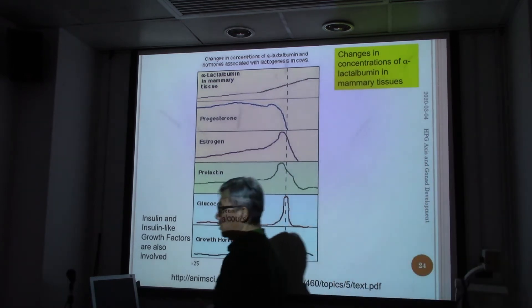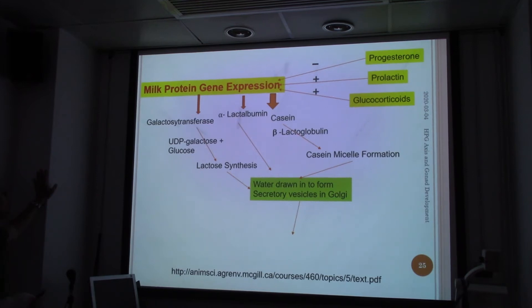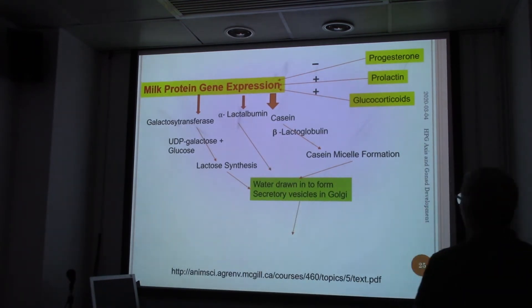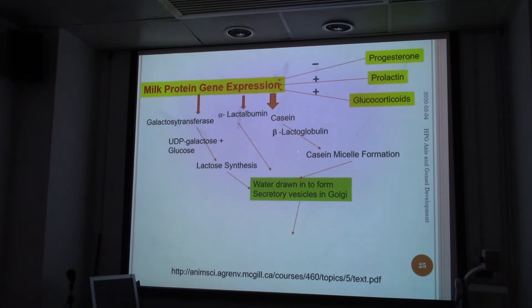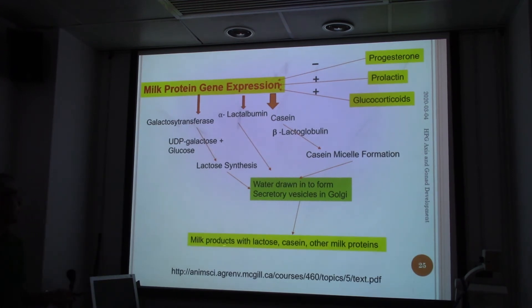Regarding milk production and what we have in milk: milk protein gene expression involves important enzymes forming glucose and lactosynthesis. We have lactalbumin and casein, which is also a major protein. These are under the control of prolactin and glucocorticoids. Progesterone is a negative factor, so before giving birth we have to turn down the progesterone level. The casein forms into milk and water joins to form vesicles in the Golgi apparatus. The milk products — lactose, casein, and other milk proteins — are thus prepared. Don't think milk is only lipid; proteins also need to be synthesized, controlled by prolactin and glucocorticoids.